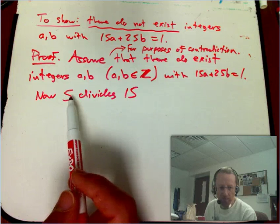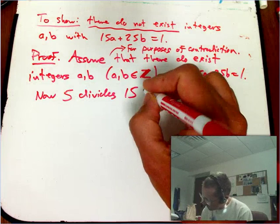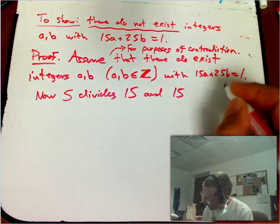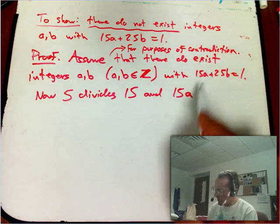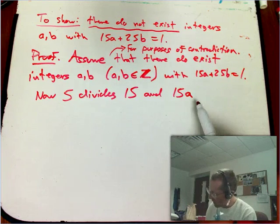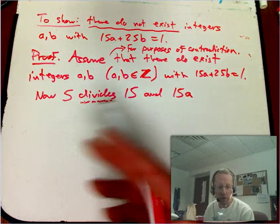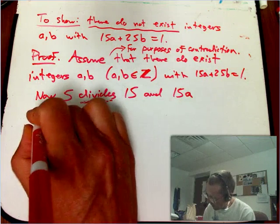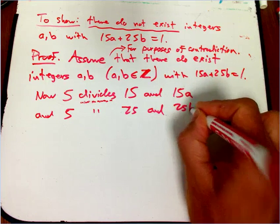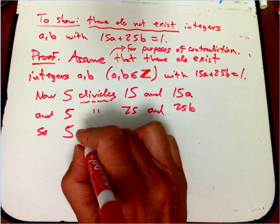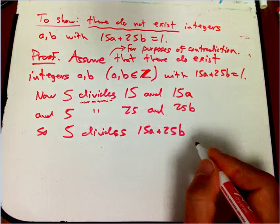You never start a mathematical sentence with a symbol or a number; it's nice to have some sort of connective word. Now, 5 divides 15, and therefore if a is an integer, that whole-number multiple of 15 is certainly going to be a multiple of 5, so 5 divides 15a. If a is negative, that's okay — 5 still divides that negative number, just with a negative quotient. And 5 divides 25, and hence 5 divides 25b. So 5 divides their sum, 15a plus 25b.